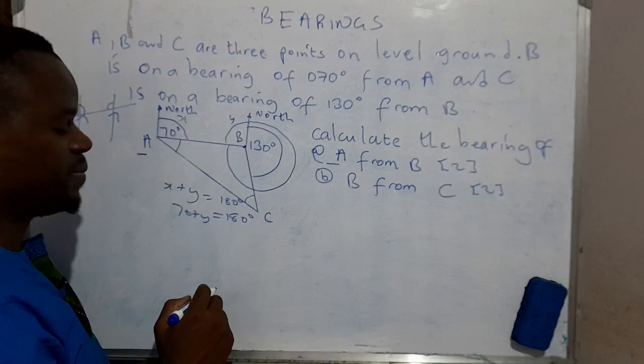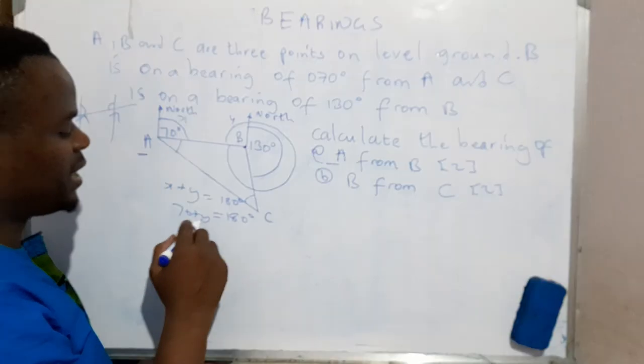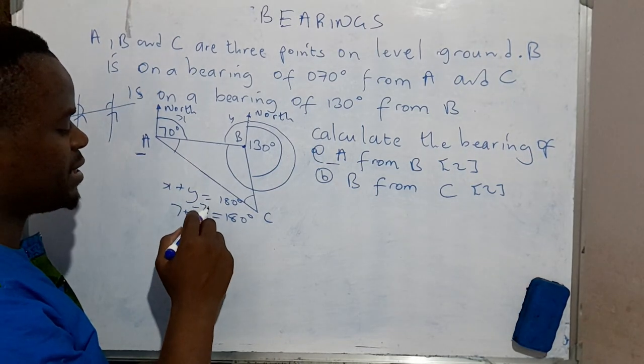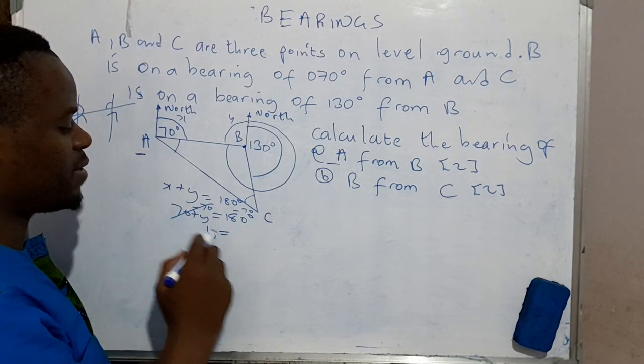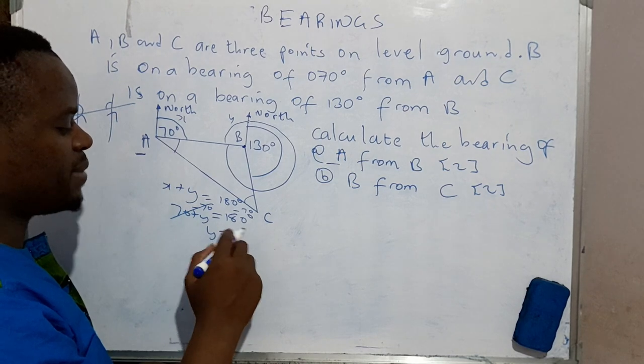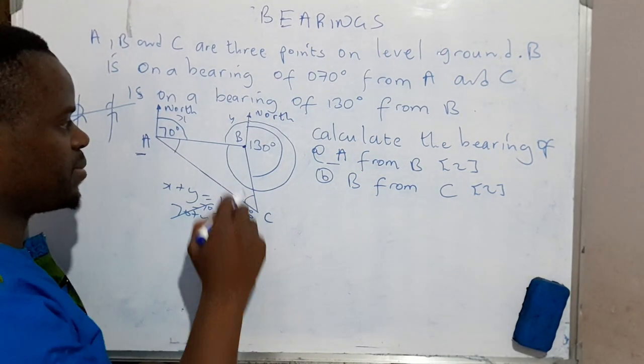So we need to find the value of y by bringing in the additive inverse of 70. So that would be y is equal to 180 minus 70, that would be 110 degrees.